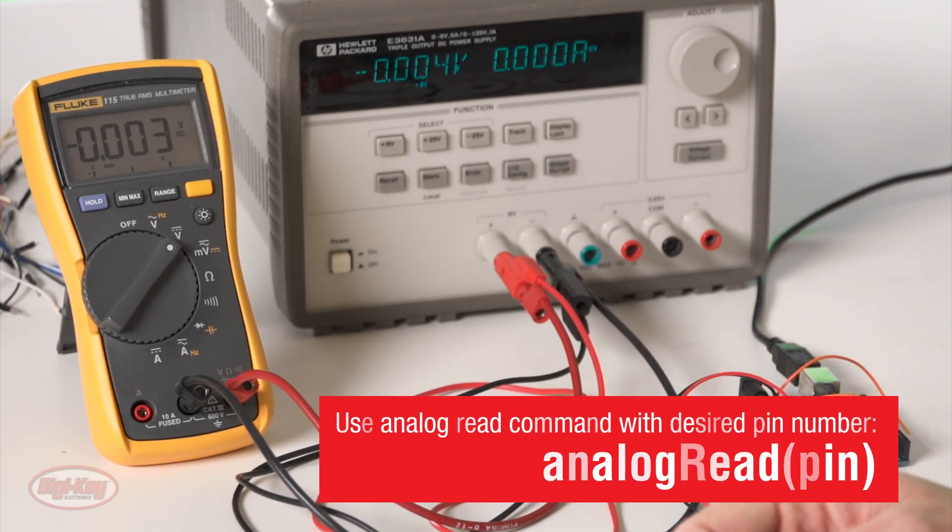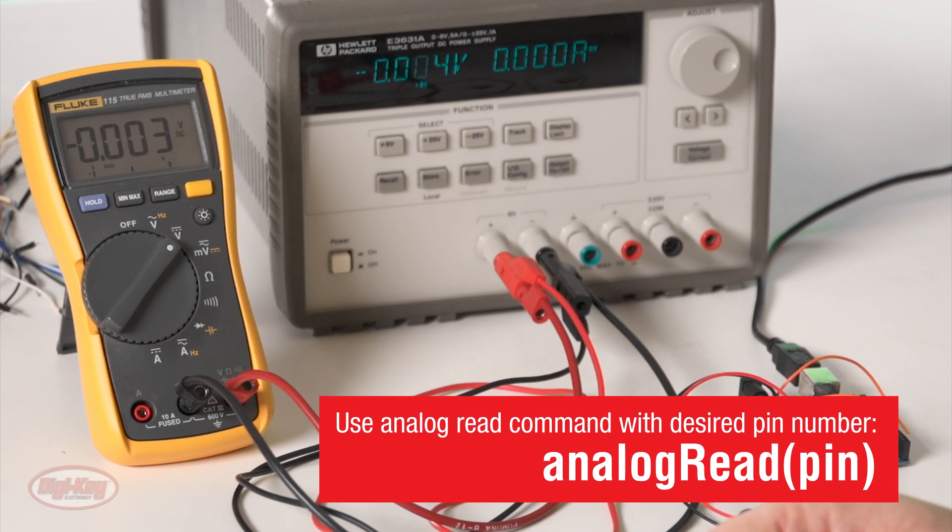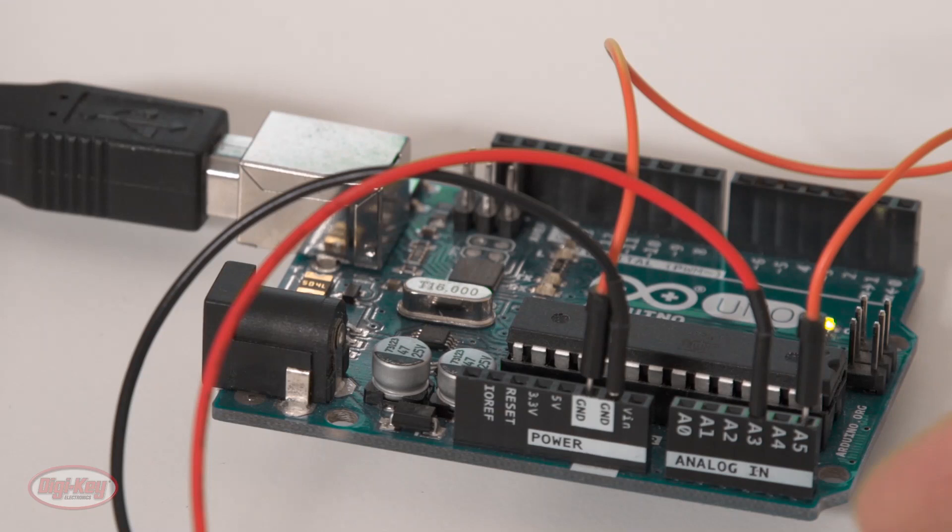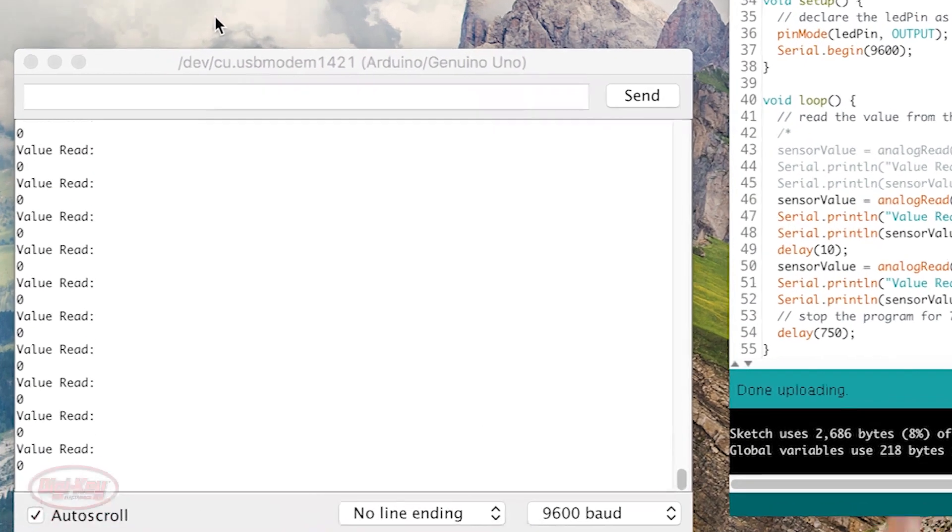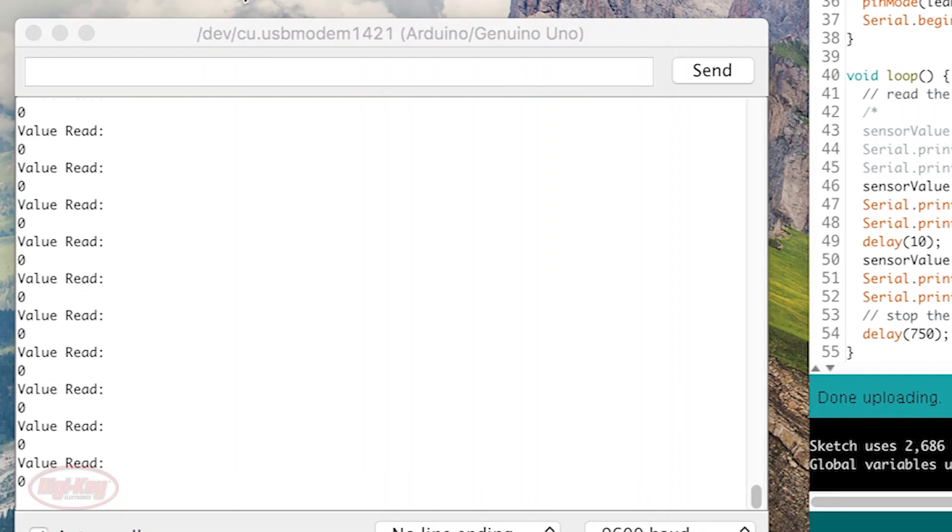The Arduino makes it really easy to read an analog value. You simply use the analog read command with the desired pin number, in this case A3. As you increase the voltage, you'll see on the screen here that the value read is jumping up.